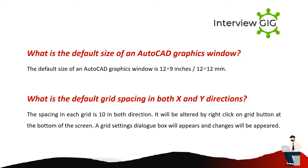What is the default size of an AutoCAD graphics window? The default size of an AutoCAD graphics window is 12 x 9 inches, or 12 x 12 millimeters. What is the default grid spacing in both X and Y directions? The spacing in each grid is 10 in both directions. It can be altered by right-clicking on the grid button at the bottom of the screen. A grid settings dialog box will appear where changes can be made.